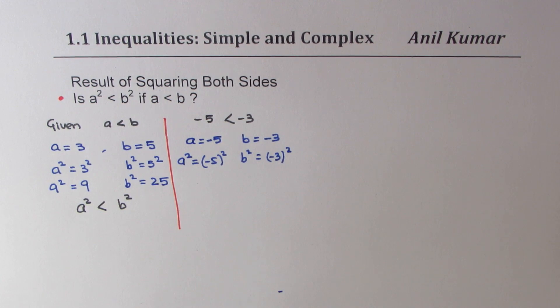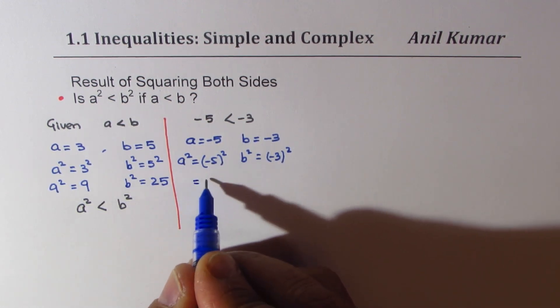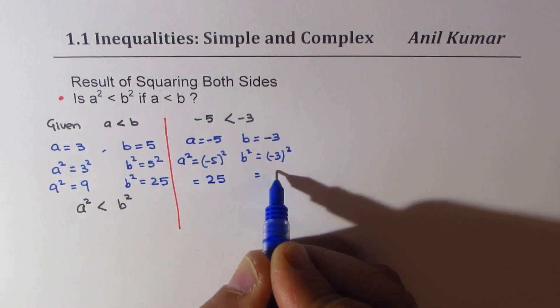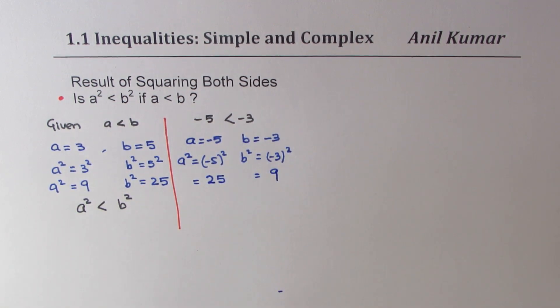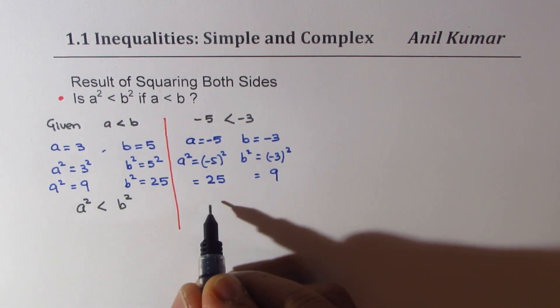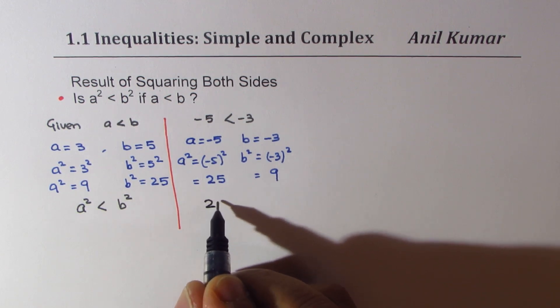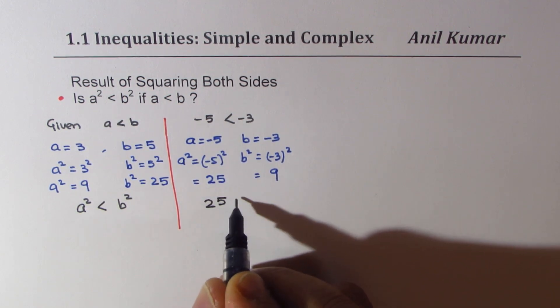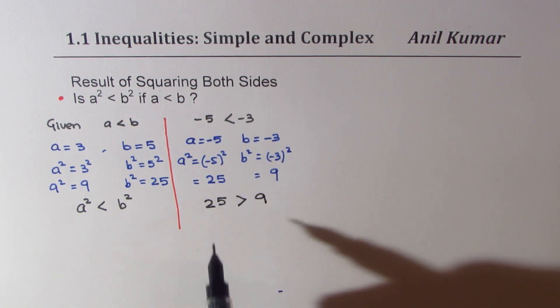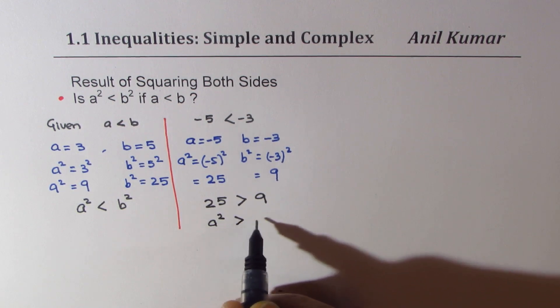Now, when I do that, what do I get? I get (-5)² as 25, and b² as 9. So, what we conclude here is, we started with this, but however, when you square, we get 25, which we know is greater than 9. So, in this case, what really happens is that a² becomes greater than b². Do you see that?